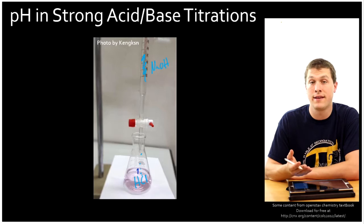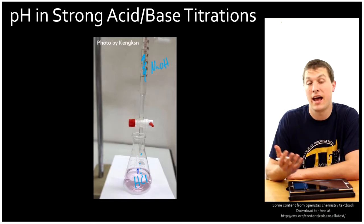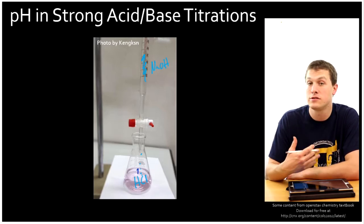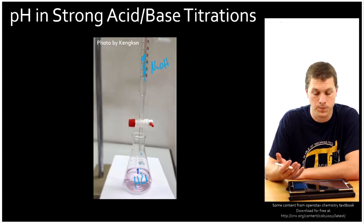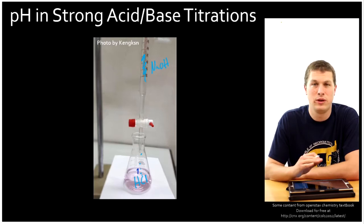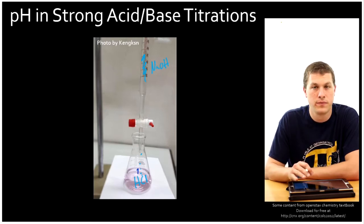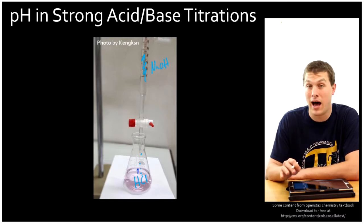HCl is a strong acid, so it's going to start with an acidic pH. As I add sodium hydroxide, the pH is going to rise, and eventually the pH will become very basic. We're going to think about what is the pH after we've added just a little bit of sodium hydroxide, after a fair amount of sodium hydroxide, and lastly after we've added a lot of sodium hydroxide.